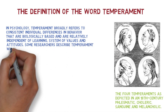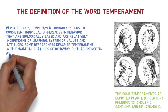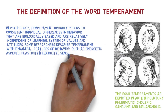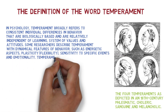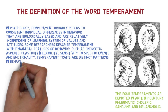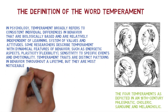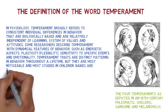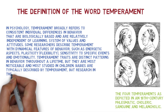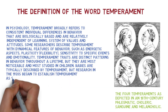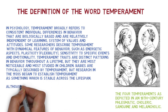Some researchers describe temperament with dynamical features of behavior such as energetic aspects, plasticity, flexibility, sensitivity to specific events and emotionality. Temperament traits are distinct patterns in behavior throughout a lifetime, but they are most noticeable and most studied in children. Babies are typically described by temperament, but researchers in the 1920s began to establish temperament as something which is stable across the lifespan.